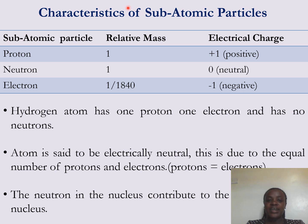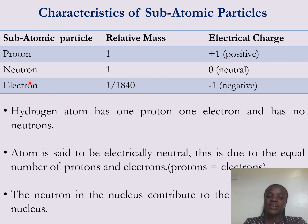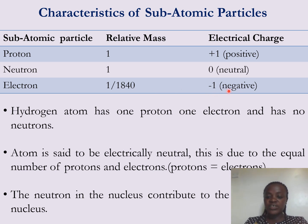We can now look at the characteristics of the subatomic particles. The proton has a relative mass of one and carries a positive charge. An electron has a very small relative mass of 1/1840 and is negatively charged.